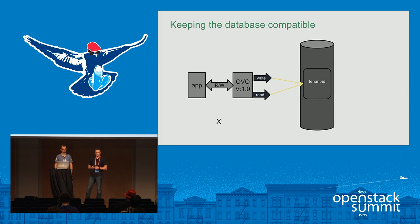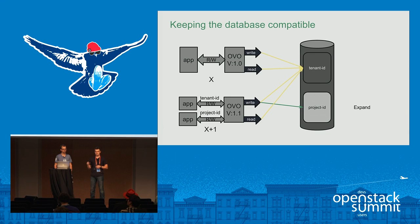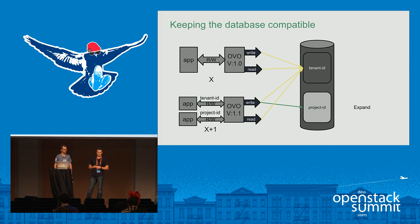In the X release, you have only the tenant_id column and a versioned object at version 1.0. When you go to X+1, you increase the object version to 1.1, continue to read and write to the older column, and use the expand phase to introduce the new project_id column. You also write to project_id, which is the new column name for tenant_id. From the X release you should be able to access tenant_id, and inside X+1 the OVO serves both tenant_id and project_id for backward-compatible agents in server-agent communications.